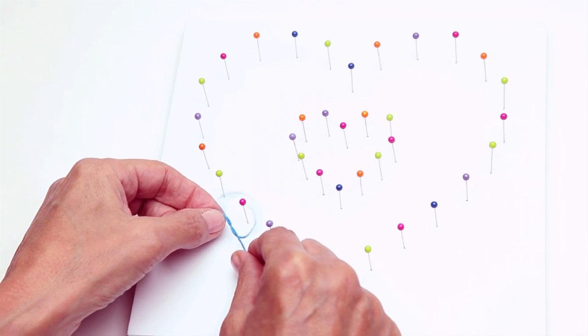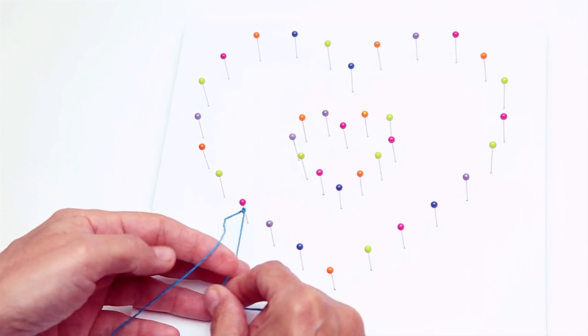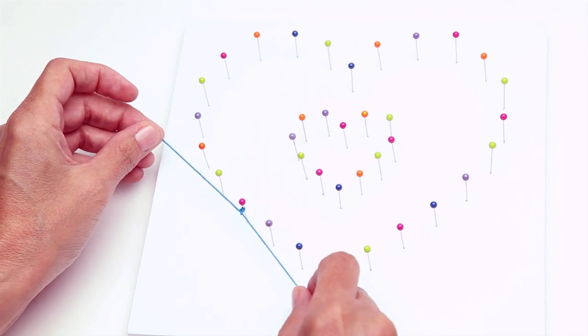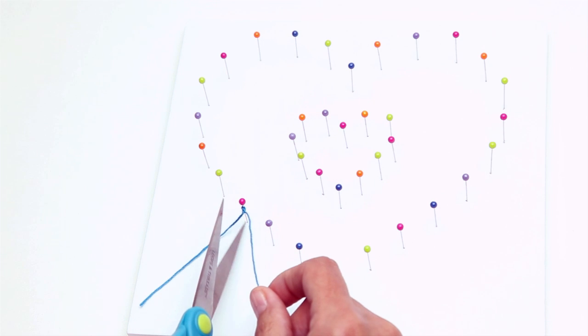Select the thread you want to start with and double knot it onto a pin. Trim the excess with scissors.